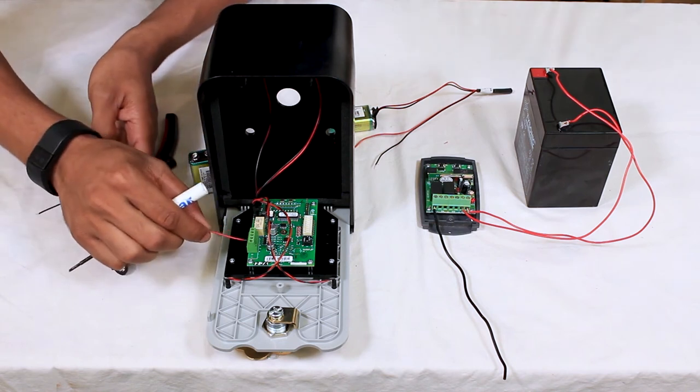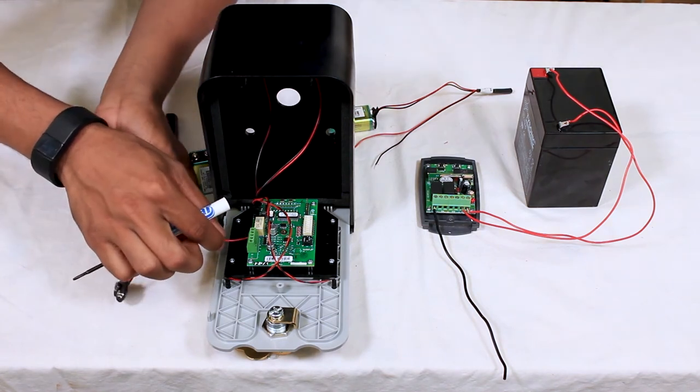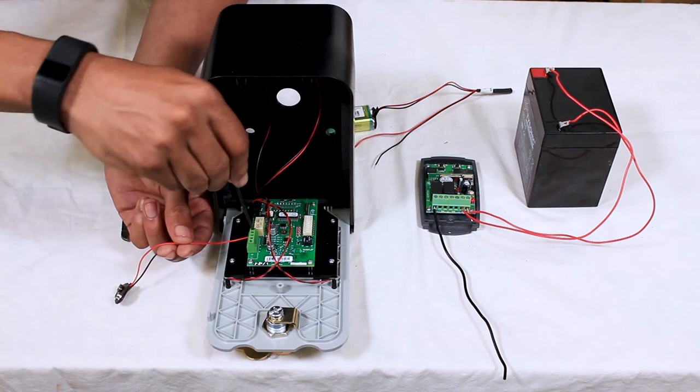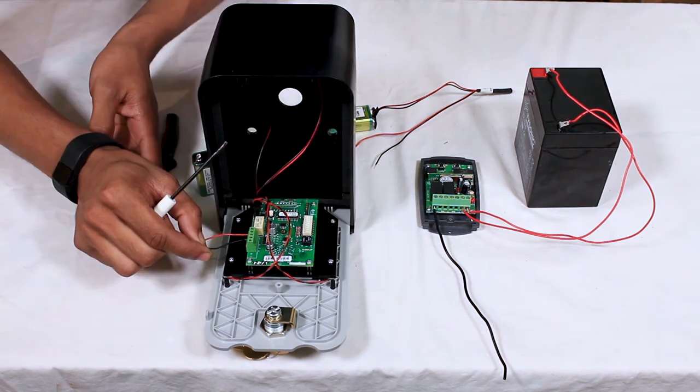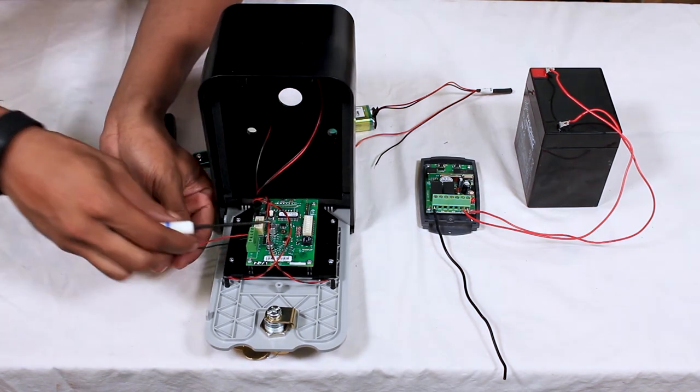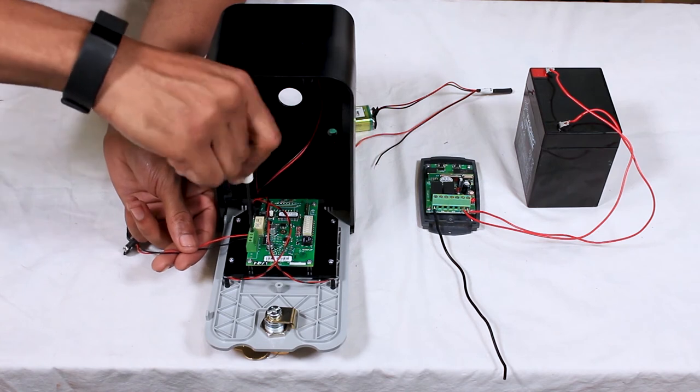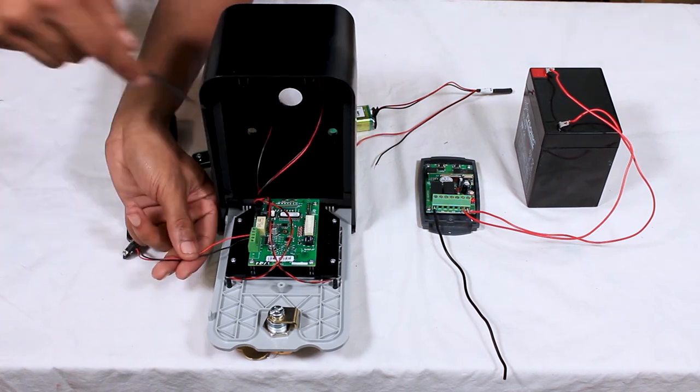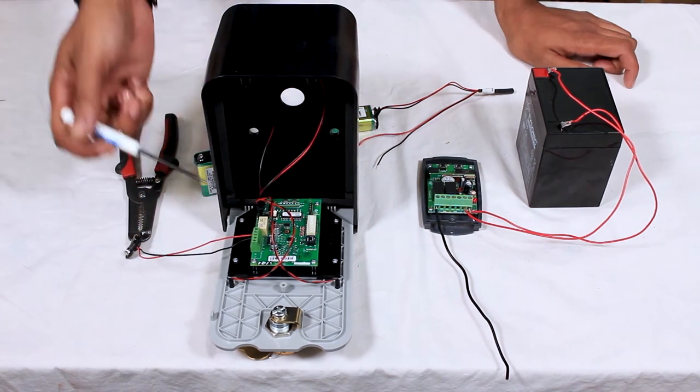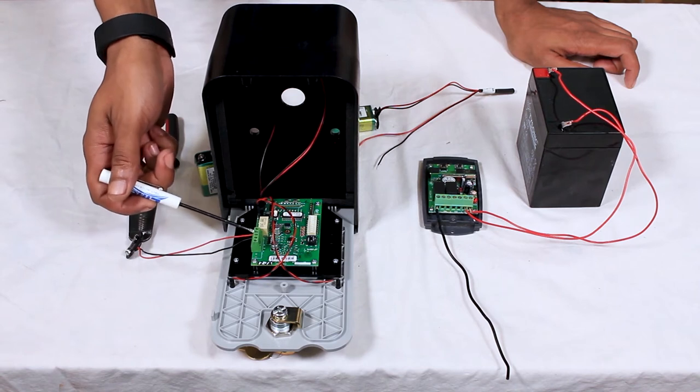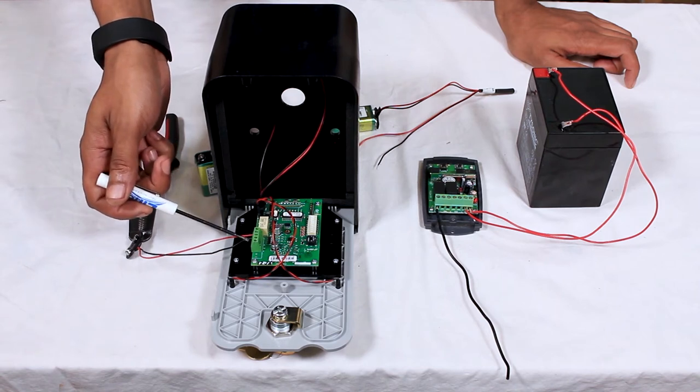I'm going to take my first lead to the positive. Take my second lead to the negative. Another good tip for you is to make sure that your wires are fully stripped and that the terminal is not crimping down on the insulation of the wire.